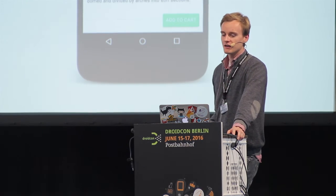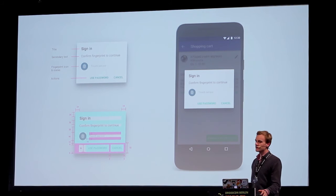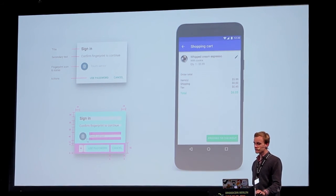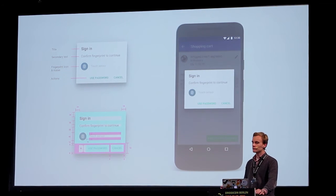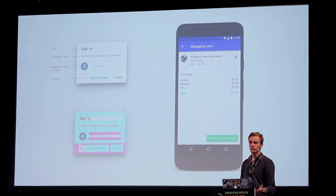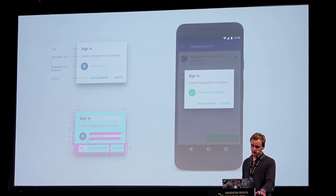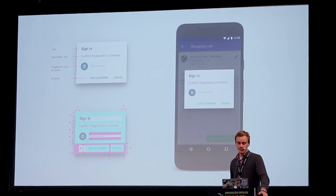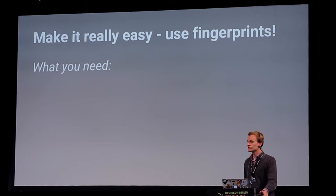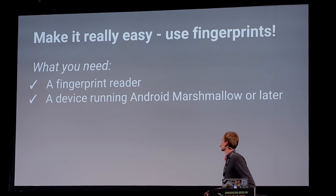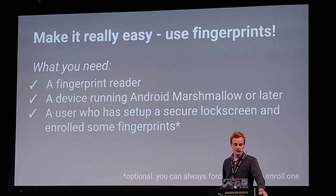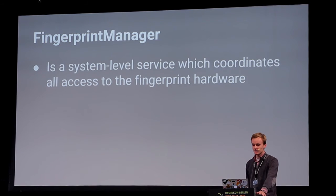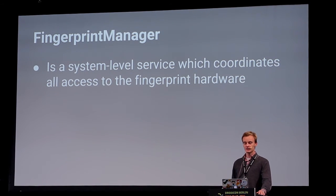The key concept of fingerprint authentication is that you can build your own dialogs and adapt them to your authentication flow — the user doesn't have to leave your app. They just tap a 'Sign In' or 'Checkout' button and then tap the sensor. What you need is a fingerprint reader, a device running Android Marshmallow or later, a user with a secure lock screen set up, and enrolled fingerprints — though that last one is optional since you can prompt users to enroll one. The class to use is FingerprintManager.